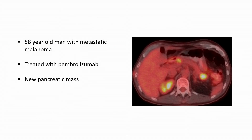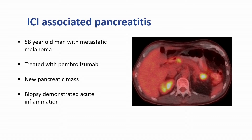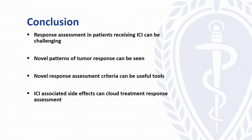The last case is a patient with metastatic melanoma treated with pembrolizumab who developed a new pancreatic mass — FDG-avid on PET-CT. This was biopsied and demonstrated acute inflammation: immunotherapy-associated pancreatitis. The take-home point is that if you see these types of lesions developing in organs where we know inflammatory side effects occur, don't automatically jump to calling progressive disease. Response assessment in this space can be challenging, and we have novel criteria that can be useful tools — just bear in mind those inflammatory side effects which can occasionally cloud treatment response.